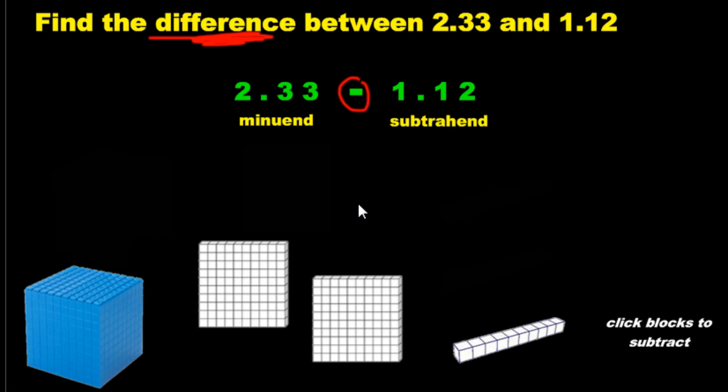And then we subtract a whole. And whatever we're left with is going to be our answer. We have one whole, two-tenths, and one-hundredth.